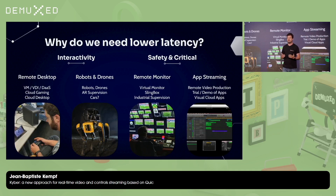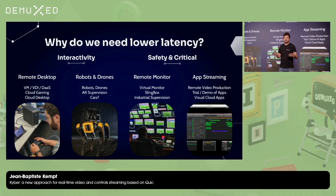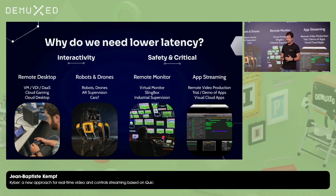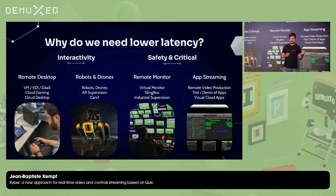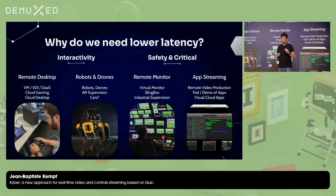Why do we need lower latency? This is for use cases that are not broadcast. We are talking about cloud gaming, cloud desktop, remote control, remote desktops, everything that is a visual cloud — Citrix, TeamViewer, and so on. We are talking about controlling drones or robots, or cars from a distance — anything where you actually need to control a machine. Because in that case every millisecond matters, as everything you gain gives you an edge on the networking time, because of course you're going to be controlling from far away.